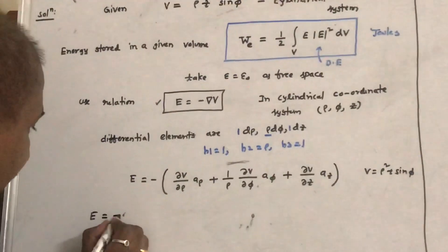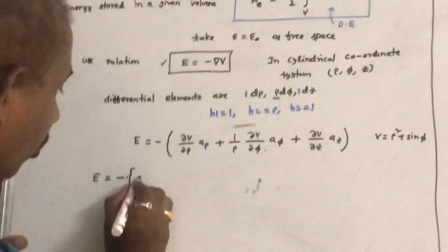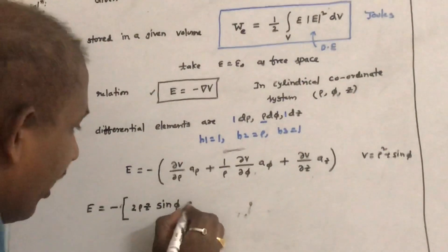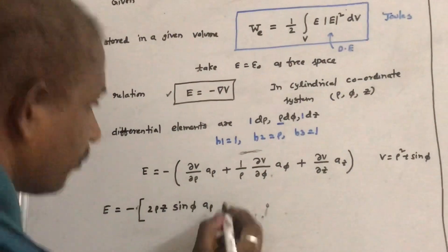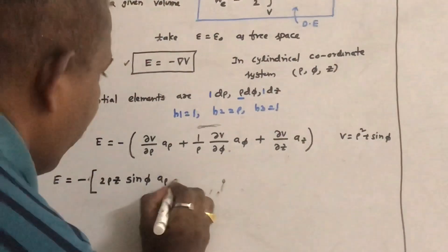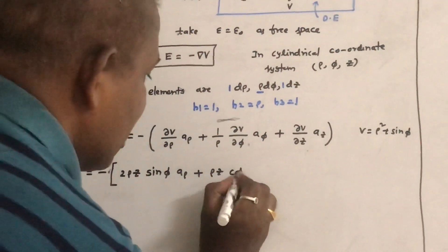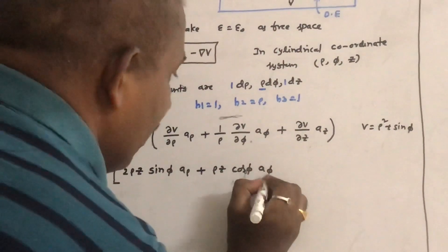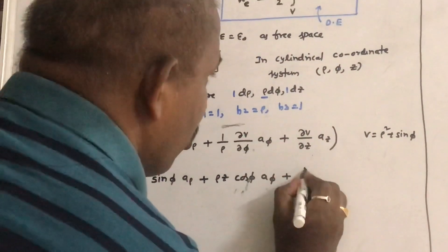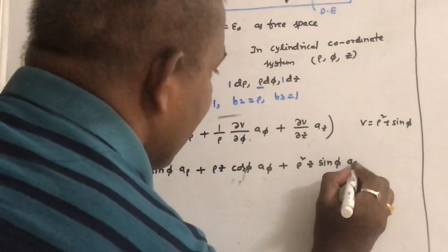Therefore E equals minus of: ∂V/∂ρ gives 2ρ z sin φ, so the a_ρ component is 2ρ z sin φ a_ρ. Then ∂V/∂φ divided by ρ gives ρ z cos φ a_φ. Finally ∂V/∂z gives ρ² sin φ a_z.